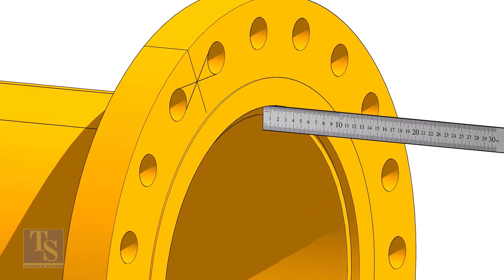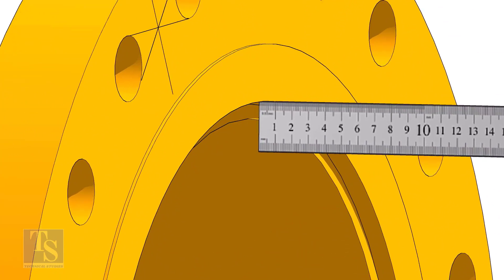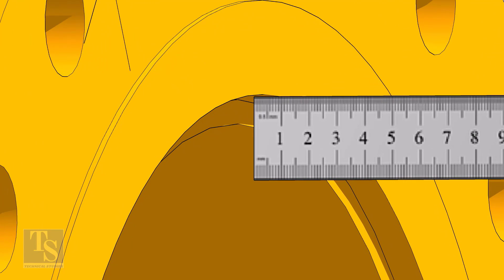Fix the distance between the flange face and the pipe face. Usually, this measurement is equal to the thickness of the pipe.